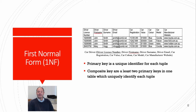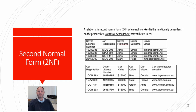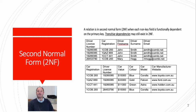Now let's have a look at second normal form, or 2NF. On the slide you see the rule for second normal form — this is something you should memorize, along with the other rules of 1NF, 2NF and 3NF. In 2NF, a relation is in second normal form when each non-key field is functionally dependent on the primary key. Transitive dependencies may still exist in second normal form.